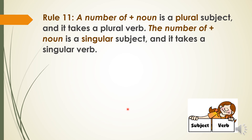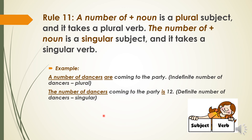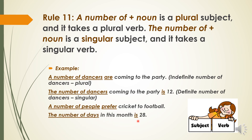A number of + noun is a plural subject and it takes a plural verb. The number of + noun is a singular subject and it takes a singular verb. Pay attention to this case because such sentences are often used in many grammar tests. For example: 'A number of people prefer cricket to football' — plural subject, plural verb 'prefer'. 'The number of days in this month is 28' — singular subject, singular verb 'is'.